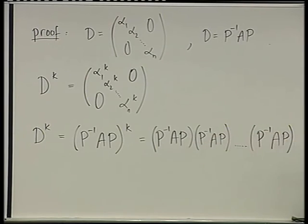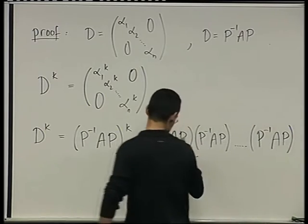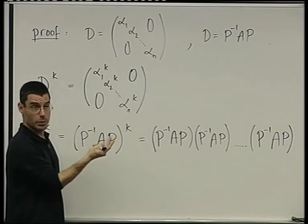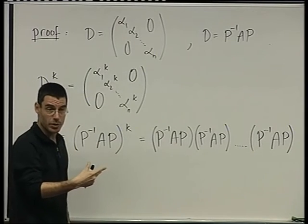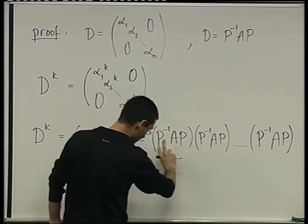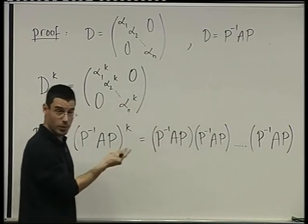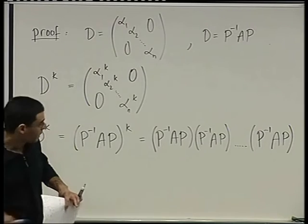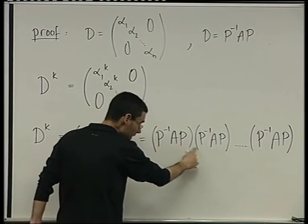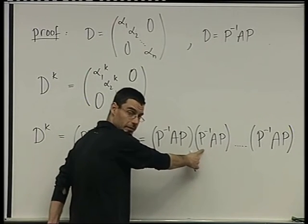Now, this is just a very long product of matrices, but matrix multiplication is associative. We can multiply them in any order as long as we don't commute, as we don't change the order of where they appear in this product. So in particular, this P and this P inverse cancel. Do you agree?